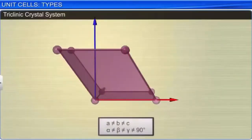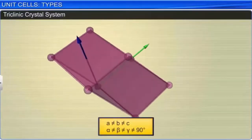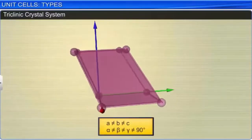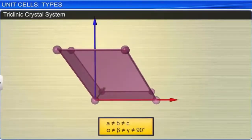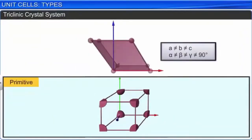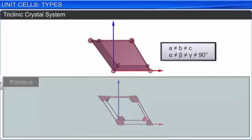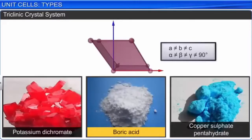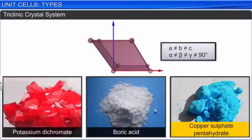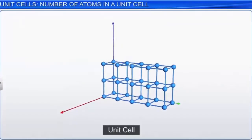In a triclinic crystal system, the three axes are of unequal length and all angles are different, and none is equal to 90 degrees. The only possible lattice is primitive. Potassium dichromate, boric acid, and copper sulfate pentahydrate are some examples.